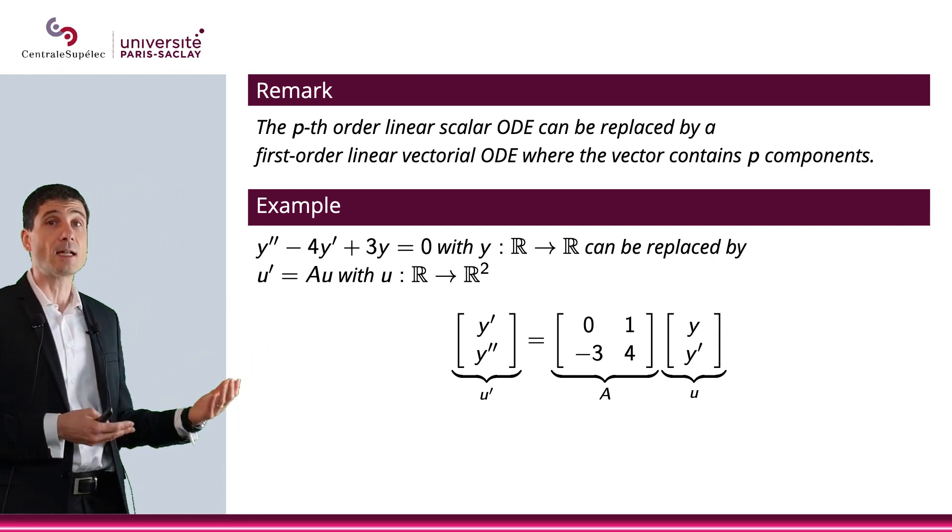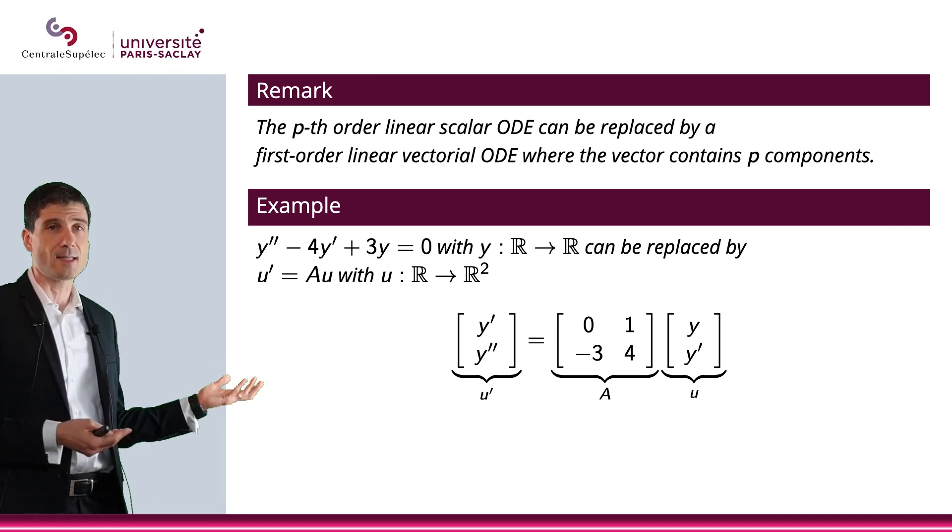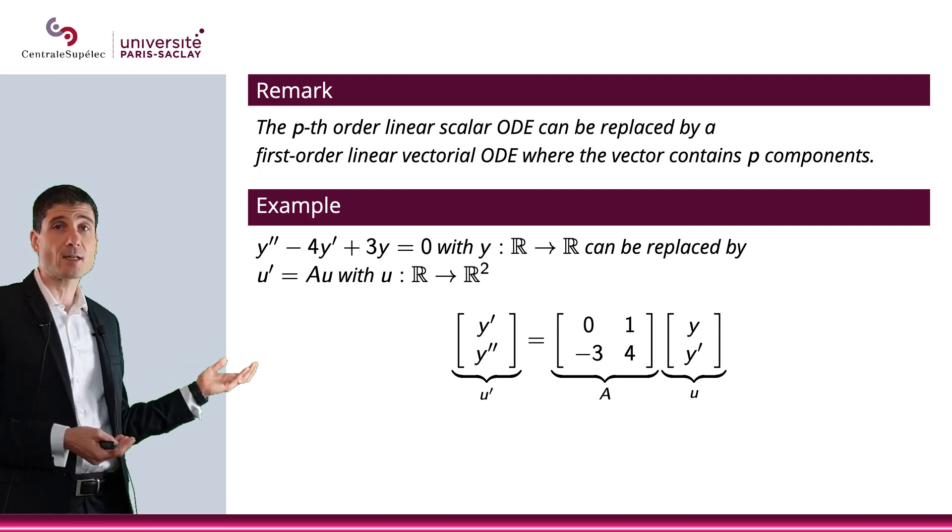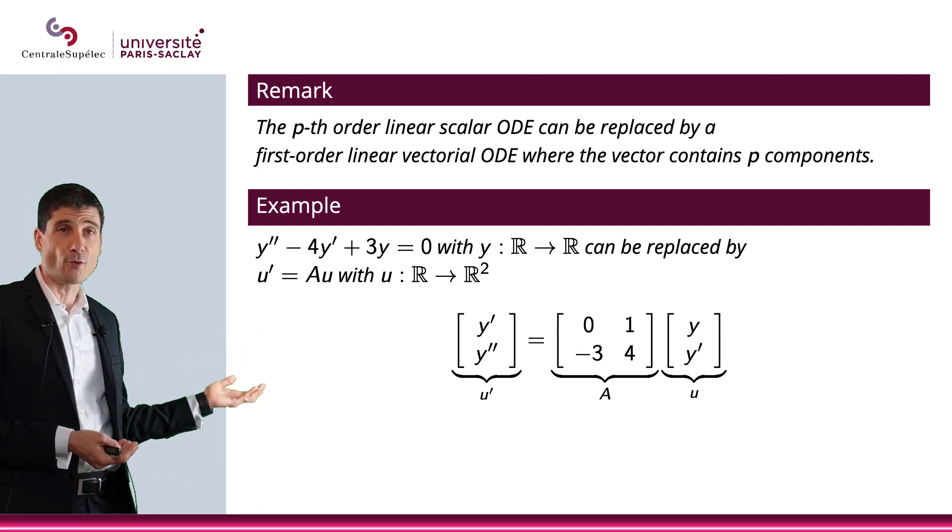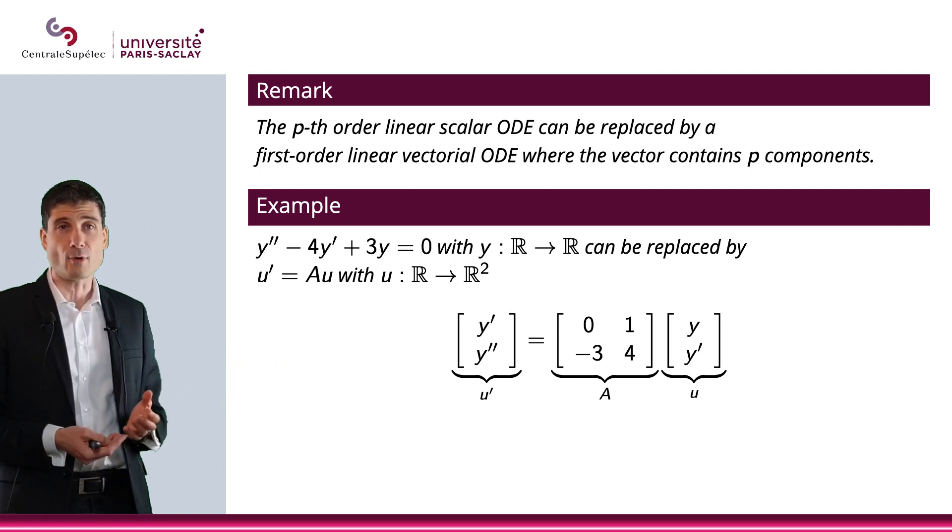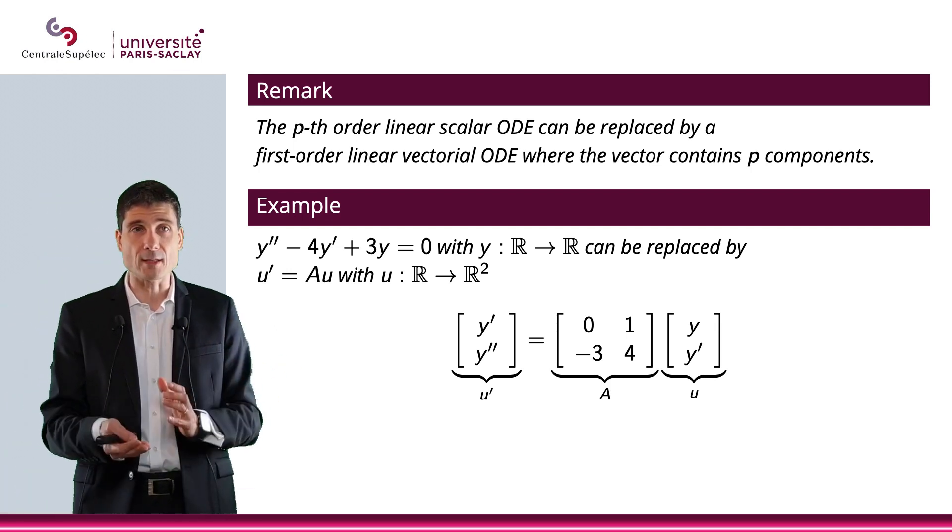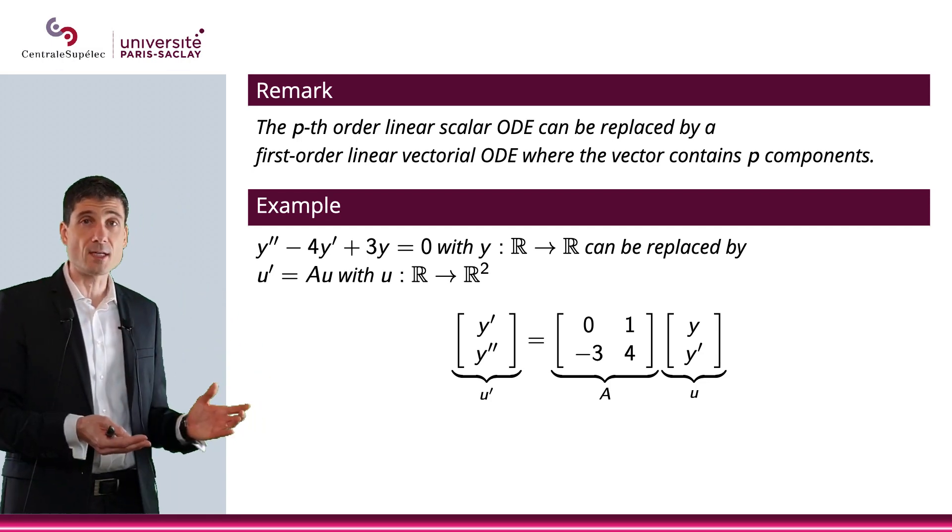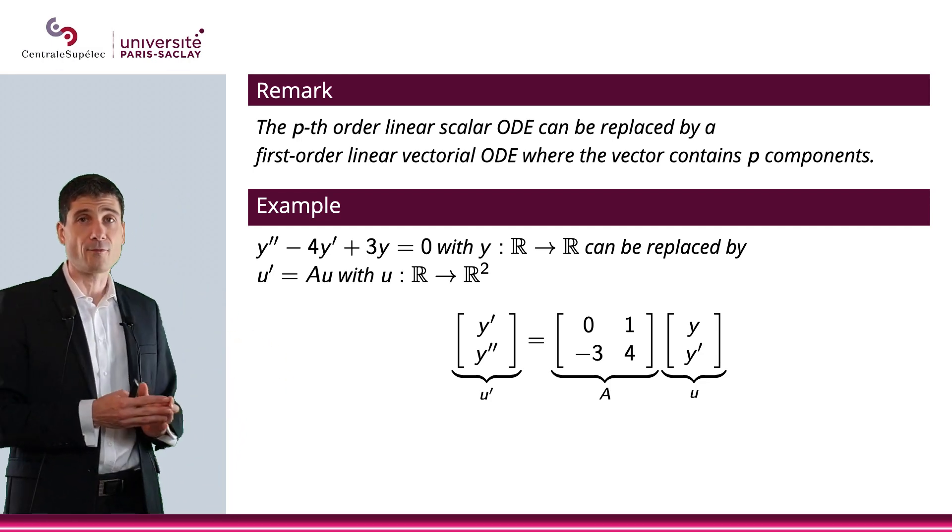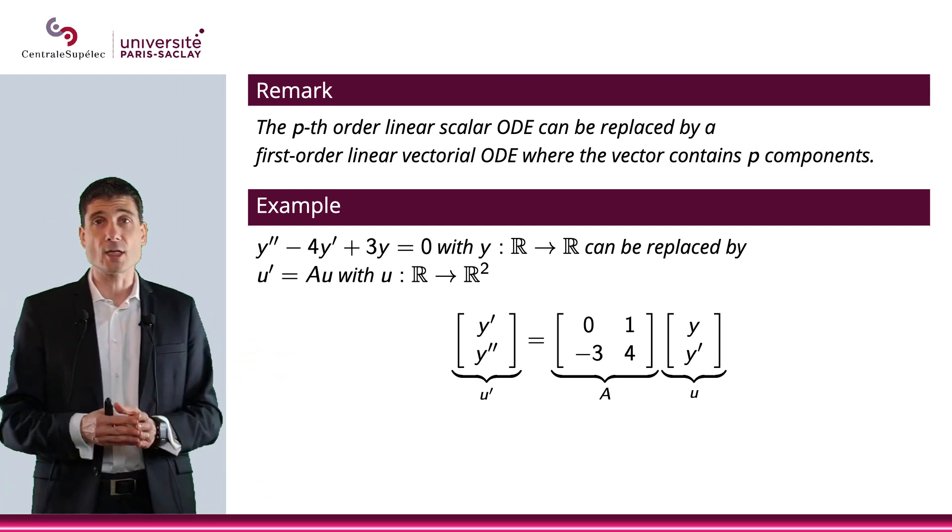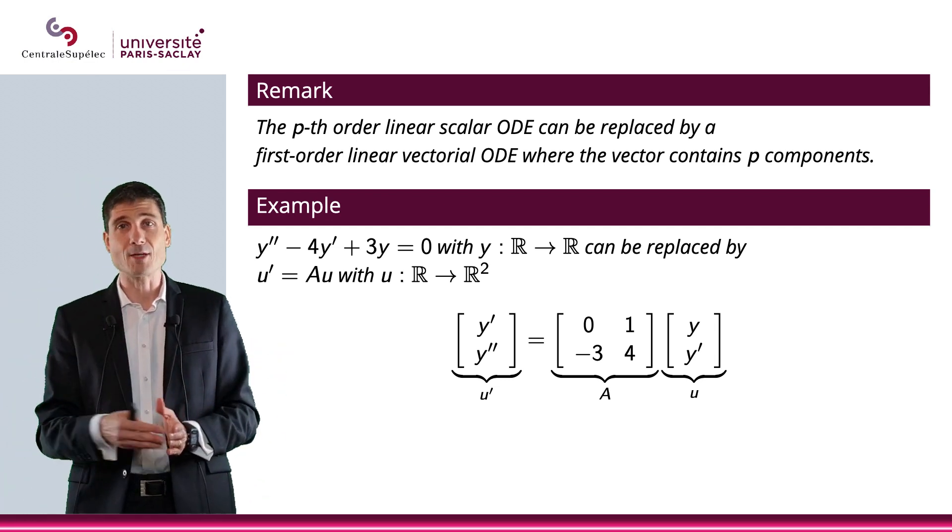And the second line is really where you get what was the ODE, which is y'' is equal to -3 times y plus 4 times y'. And so you see, you really get your ODE this way. So there is an equivalence between the ODE, which is of second order in dimension 1 and that other ODE, which is of first order, but in dimension 2.